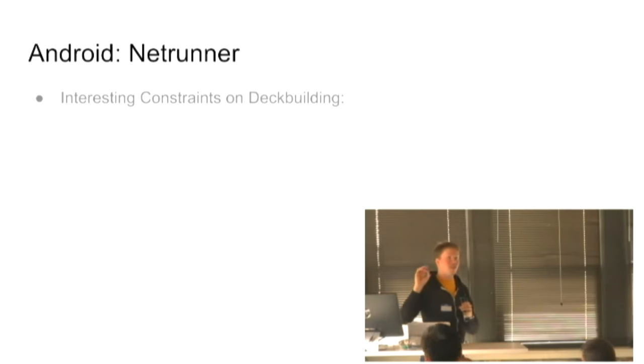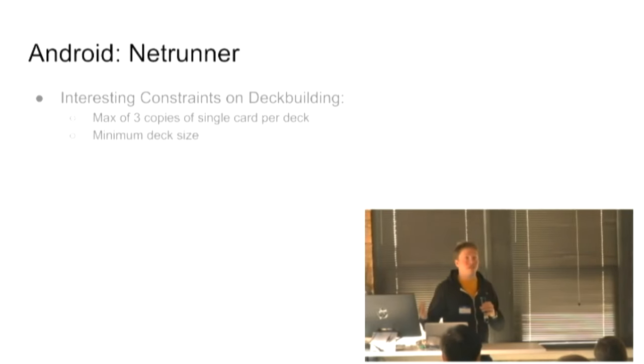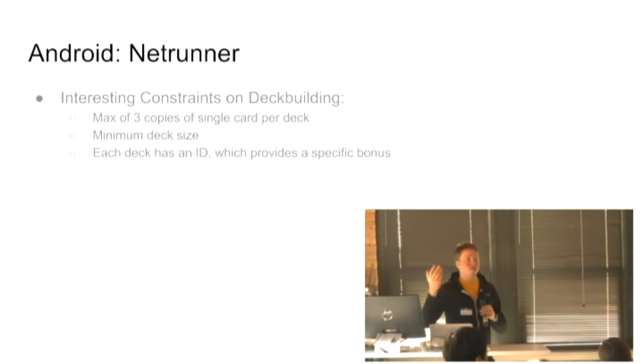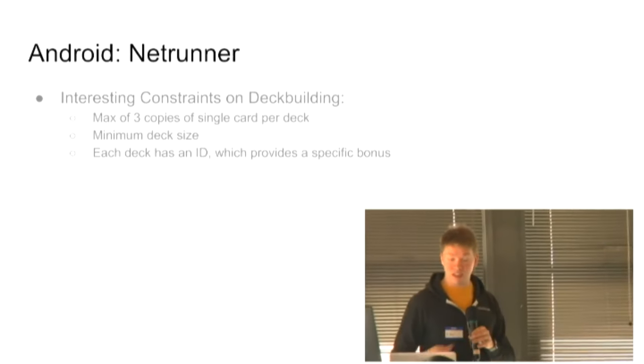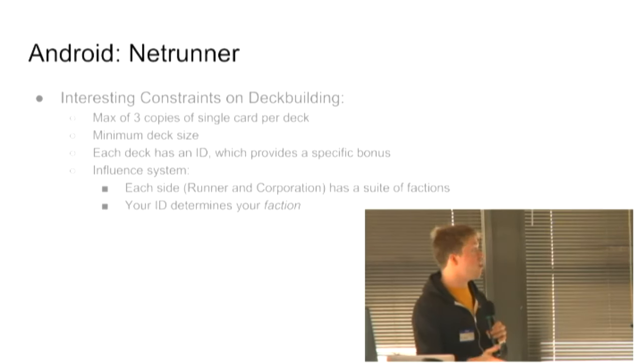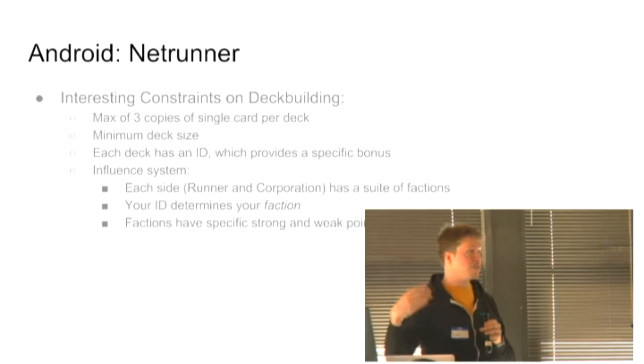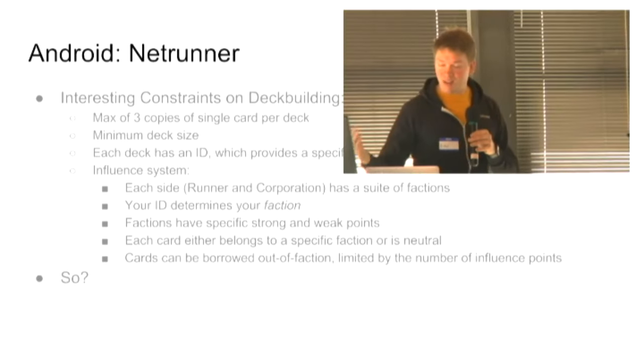The reason this is interesting from a data perspective is that there are all these little different constraints on deck building that make this really fun. So you can have three copies of a single card in your deck. You have a minimum deck size. This is usually 40 to 50 cards. So you can't just have 20 cards and call it a day. And every deck has an ID. And this ID gives it a specific bonus that they get to use. There's an influence system. So each side has kind of a set of factions they can choose their cards from. But your ID kind of belongs to a certain faction. Those cards are free. Outside of that, they have to kind of spend these points that they have. And they have a certain number of points to pull cards in from other sides. So different decks have different patterns that they follow. You can borrow them from out of faction.